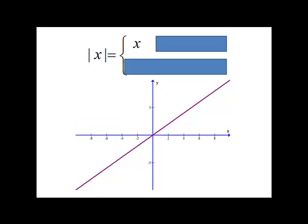Now we have to identify which piece that's referring to, and that's only if x is greater than or equal to zero. So we want to cut off our function there. So when x is greater than or equal to zero, we have the graph of y equals x.